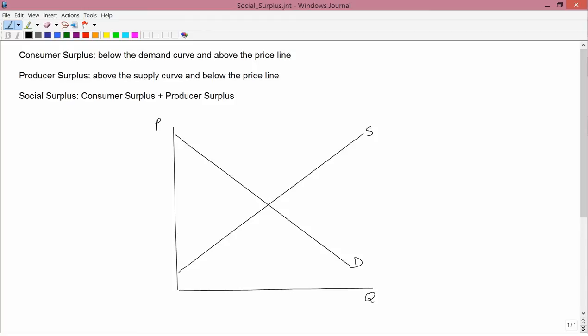And graphically, I think this is pretty clear. Draw it over here. If, let's say, this is the price line, then if you take consumer surplus, which is the area below the demand curve and above the price line, and producer surplus, which is the area above the supply curve and below the price line, and you add them together, what you end up getting is just the area between the supply curve and the demand curve. So the whole area between the supply curve and the demand curve represents social surplus.